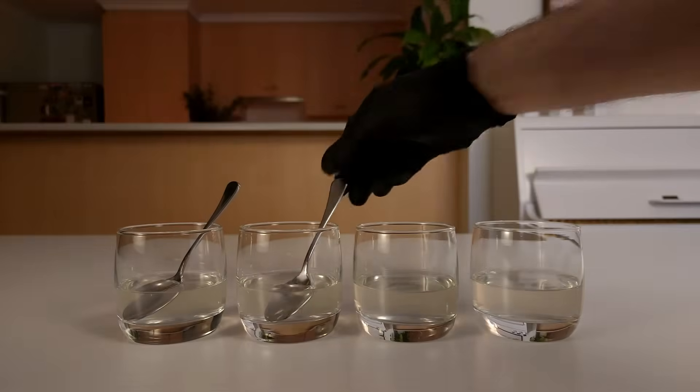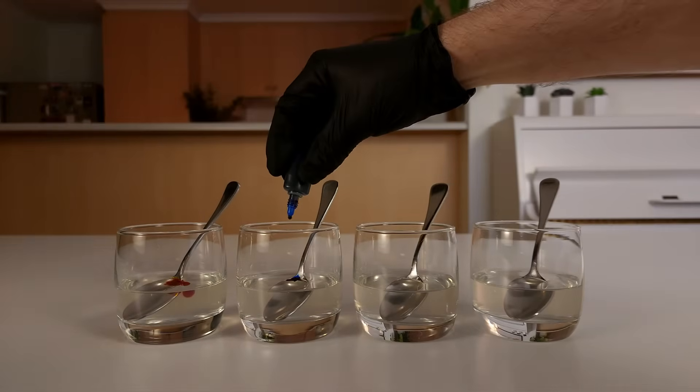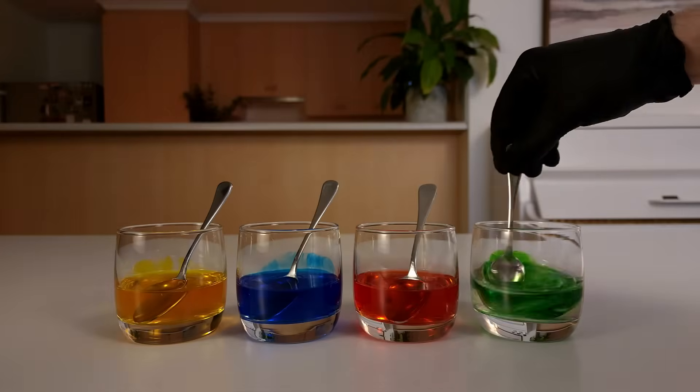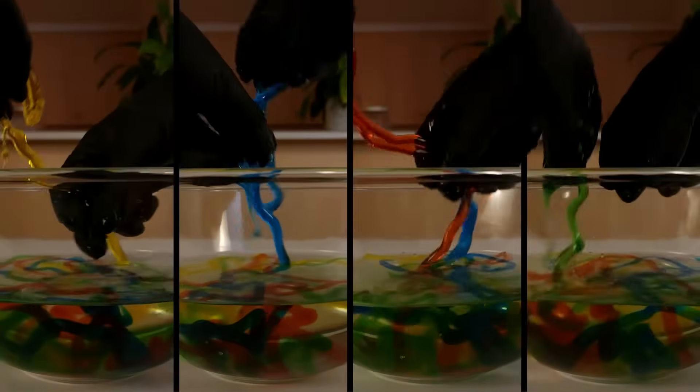You can also try adding a few drops of food colouring to the sodium alginate solution. I've divided my solution into 4 cups, which I'm going to turn yellow, blue, red and green. And then I'll use these solutions to create some colourful worms.